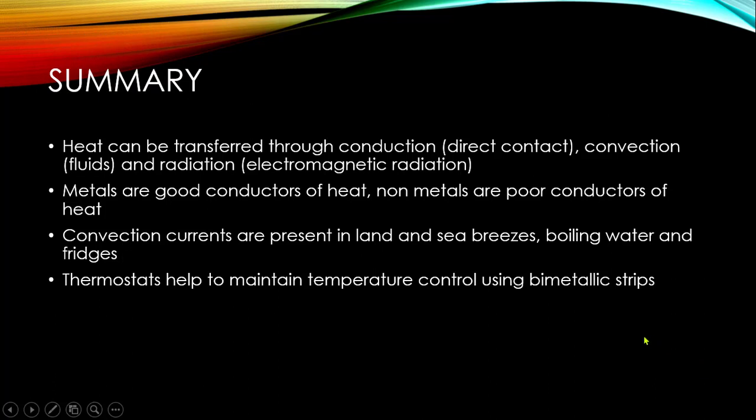So let's take a look at what we learned today. Heat can be transferred through conduction, that's direct contact, convection through fluids, and radiation, through electromagnetic radiation or without any particles. Metals are good conductors of heat. Non-metals are poor conductors of heat or insulators. Convection currents are present in land and sea breezes, boiling water, and fridges. Thermostats help to maintain temperature control using bimetallic strips. So that is the end of it for today. Please look out for a review sheet with some questions on it and you will have to submit this online for me. In the meantime, you can also look out for another video and you can do some reading in the textbooks. So that's it for today. Bye.